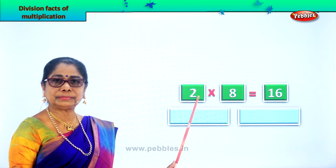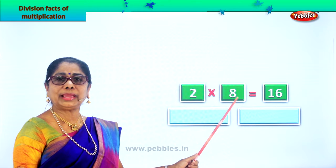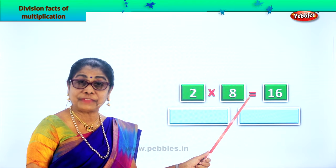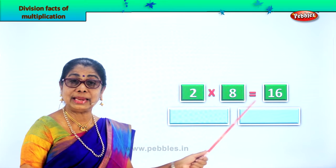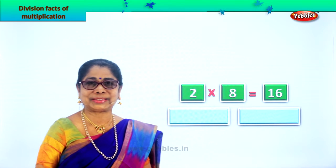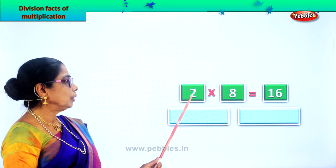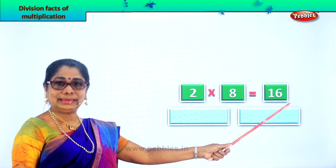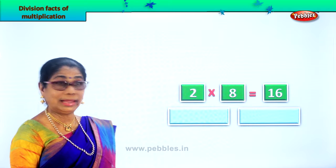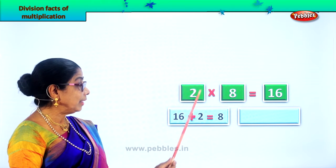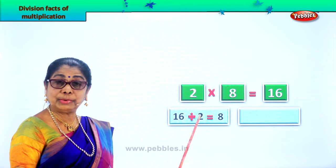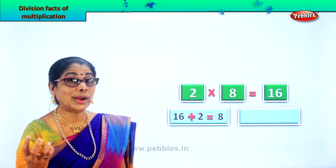Look at this. Two into eight — two eights are equal to sixteen, and this is called a multiplication fact. Two eights are sixteen, and for this one multiplication fact, we can get two division facts. How? Let's look. Two eights are sixteen. If you divide sixteen by two, what will we get? Sixteen divided by two will give you eight. That is the two times table — two eights are sixteen. That is one division fact.